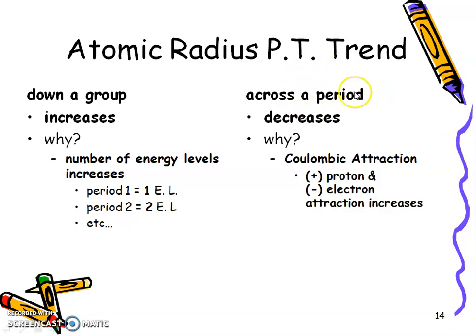Now across the period is a little bit trickier, the size actually gets smaller as we go across the period. Now why? Something called columbic attraction. So the positive protons inside the nucleus are attracted to the negative electrons in the electron cloud. And what happens is, as you gain more protons and electrons, that attraction with each other is going to increase. So if the attraction increases, then that means the atom is actually going to get smaller.